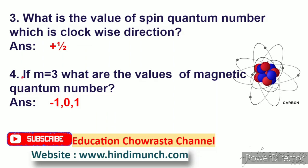Next question: if m is equal to 3, what are the values of magnetic quantum number? m yokkha value 3 ayite, magnetic quantum number yokkha values enti? Answer: minus 1, 0, 1.